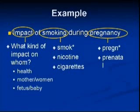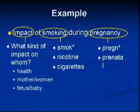You might also want to think about what is it about smoking that is worrisome or might have an impact — like nicotine. Or you might think: what are they smoking? In this case we're interested in cigarettes as opposed to cigars or something else. And then in terms of pregnancy, using that wildcard we can take care of both 'pregnant' and 'pregnancy' so you don't have to put in both words. You might also think of 'prenatal' as another term. Just by thinking about each word in your question, we were able to generate a list of keywords we can use to find articles.